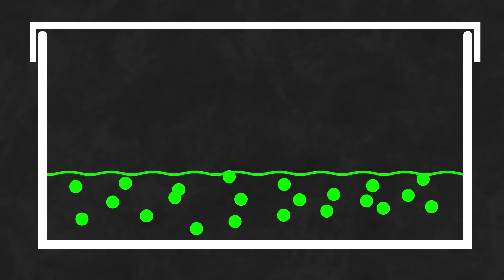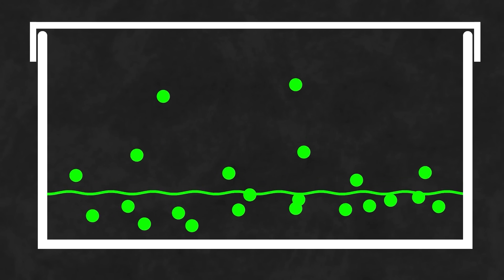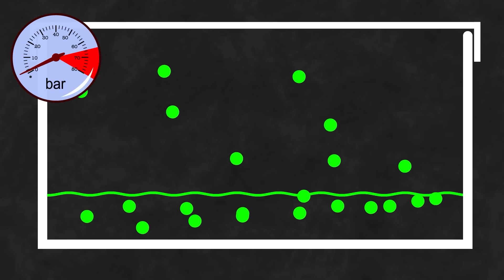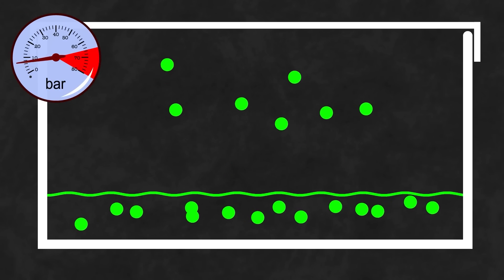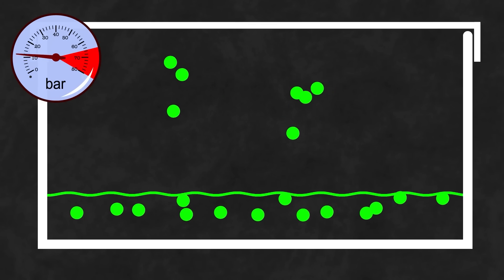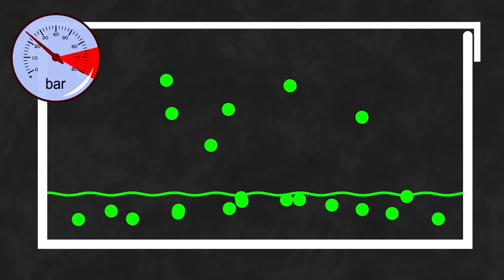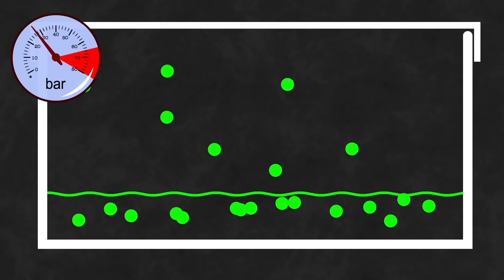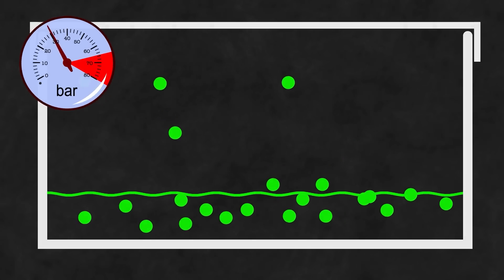As evaporation happens the space above the liquid will gradually become saturated with example lane vapors and the pressure within the system will increase as more of the liquid becomes a gas and takes up more space. Naturally the increasing saturation will mean that some of the molecules in the vapor will start to re-condense on the surface of the liquid until eventually you'll reach a point where the rate of evaporation or escaping molecules will match the rate of condensation.